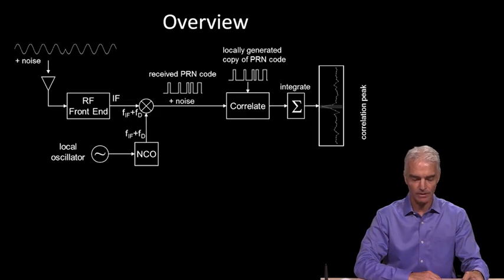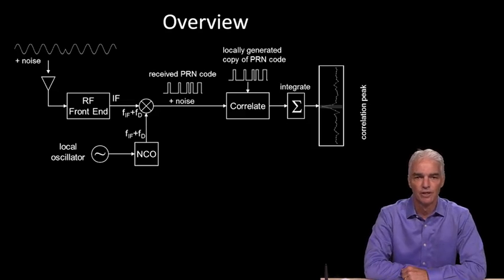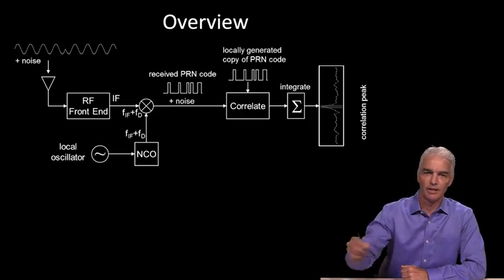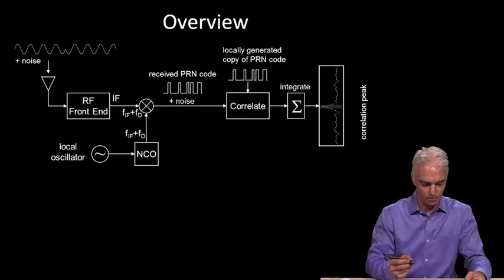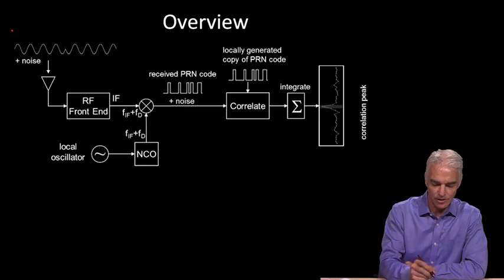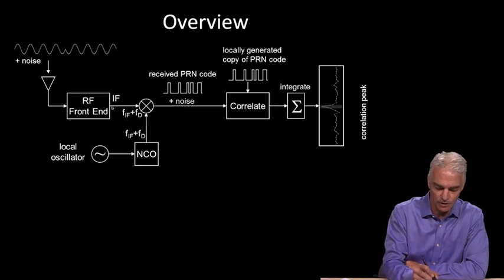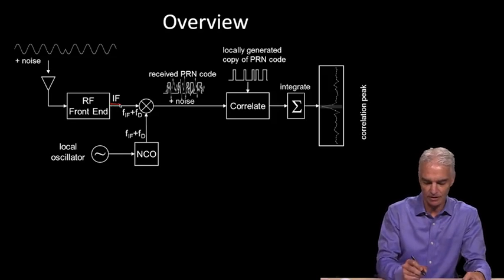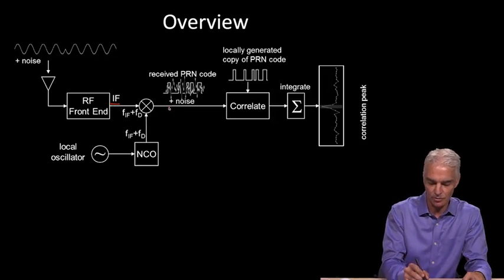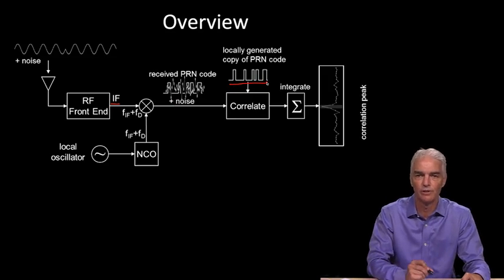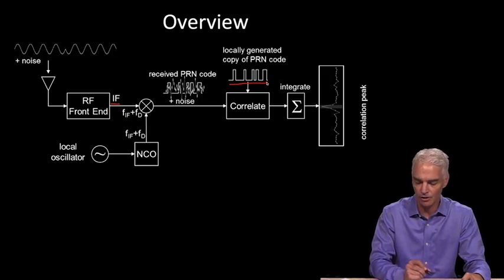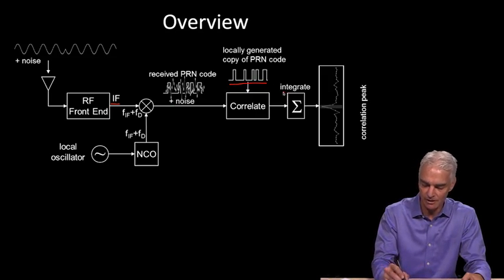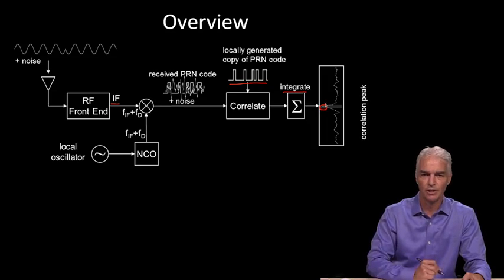Let's look at the receiver block diagram. We've seen how the signal comes in to the front end of the receiver and gets mixed down to intermediate frequency. At this stage, we have the signal buried in noise. We do a correlation with a locally generated copy of the code.